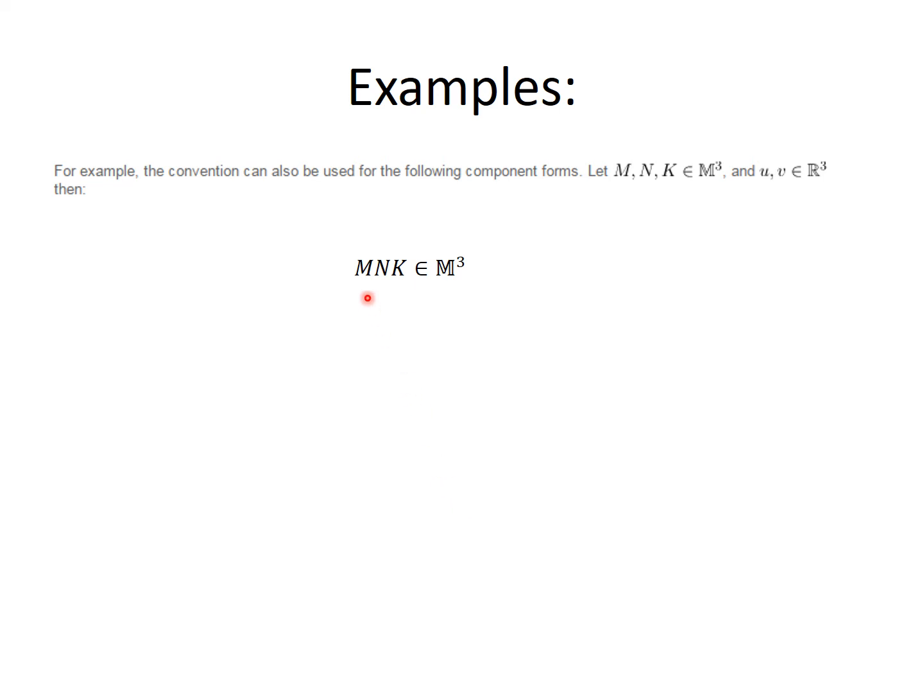Let's consider the matrices M, N, and K. When multiplied by each other, they give another matrix with components ij. This matrix is obtained by summing over the internal subscripts of these matrices. The first matrix M takes subscript i and a new subscript k. The second matrix N takes the subscript k and a new one l. And the matrix K takes a subscript l and the free subscript j. Summation is over k and l.